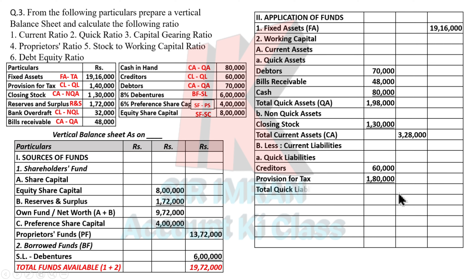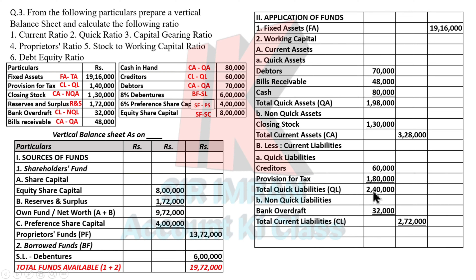Adding the two quick liabilities — creditors and provision for tax — gives total quick liabilities: 2 lakh 40,000. Under non-quick liability, only one entry: bank overdraft 32,000. Adding quick and non-quick gives total current liabilities: 2 lakh 72,000 (240,000 + 32,000). Deducting current liabilities from current assets gives working capital: 56,000. Fixed assets 19 lakh 16,000 plus working capital 56,000 gives 19 lakh 72,000 — total fund employed or capital employed. Both totals match, so the balance sheet tallies.